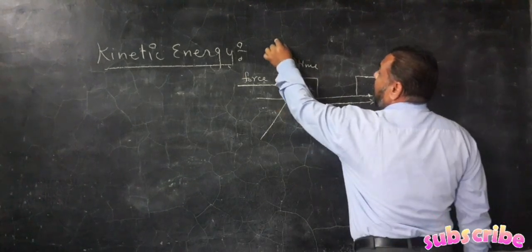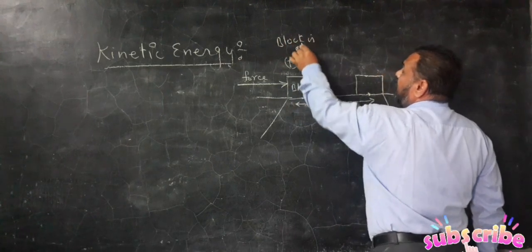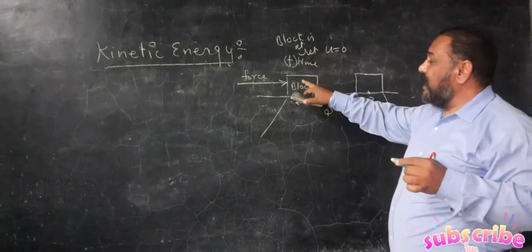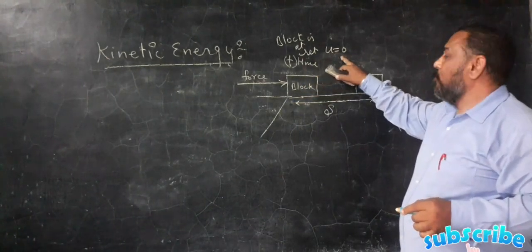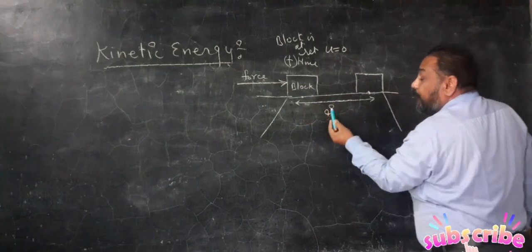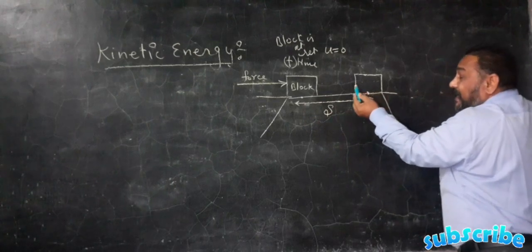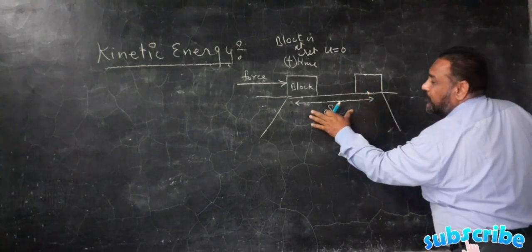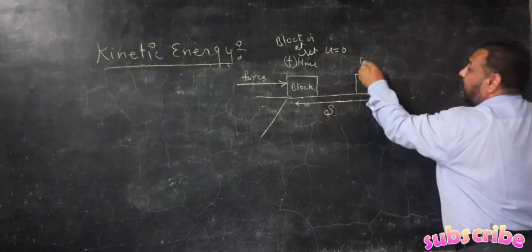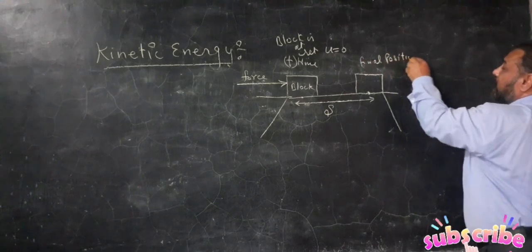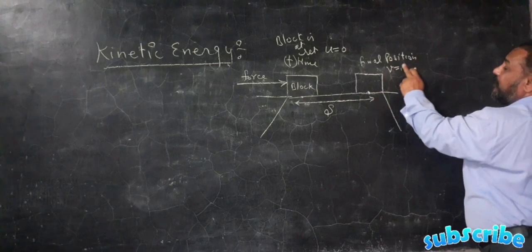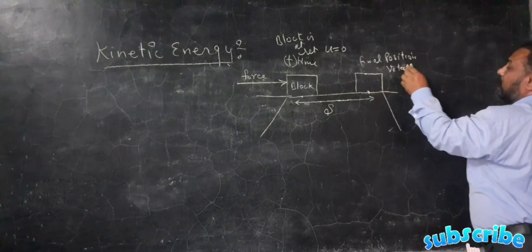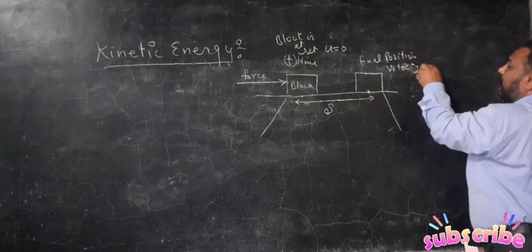Before applying the force, the block is at rest, so its initial speed is zero — initial velocity U = 0. Now, if we apply a force on the block, it produces displacement and accelerates to the final position. At the final position, the block has final velocity V.